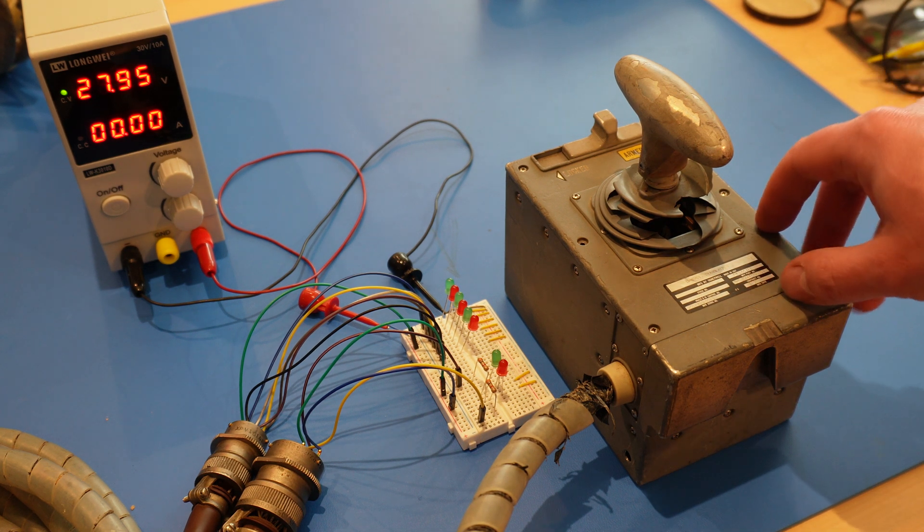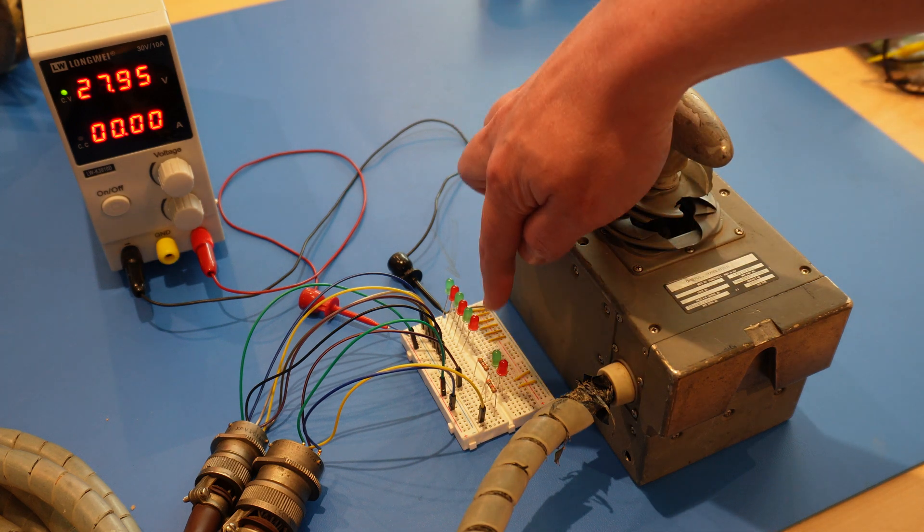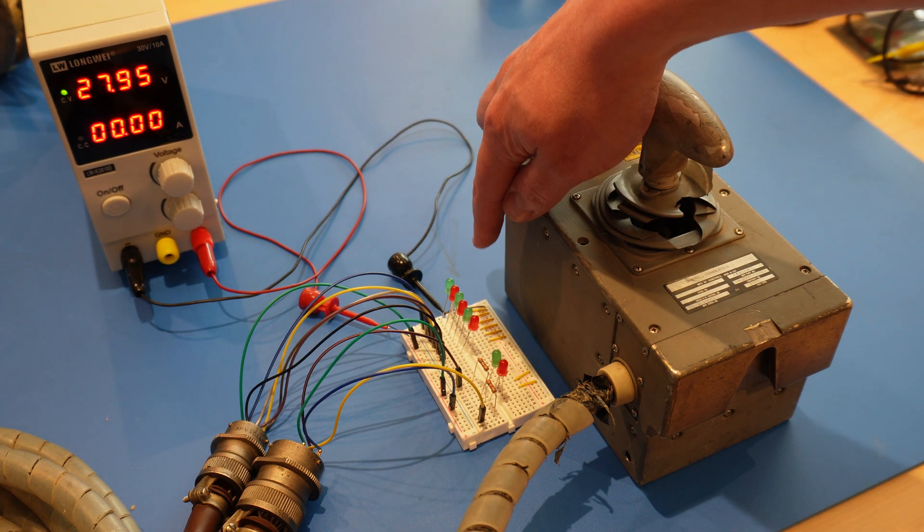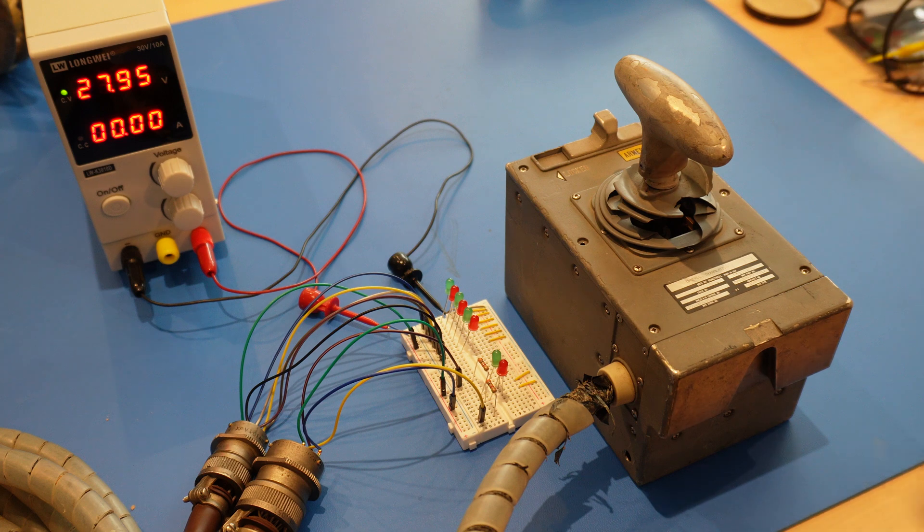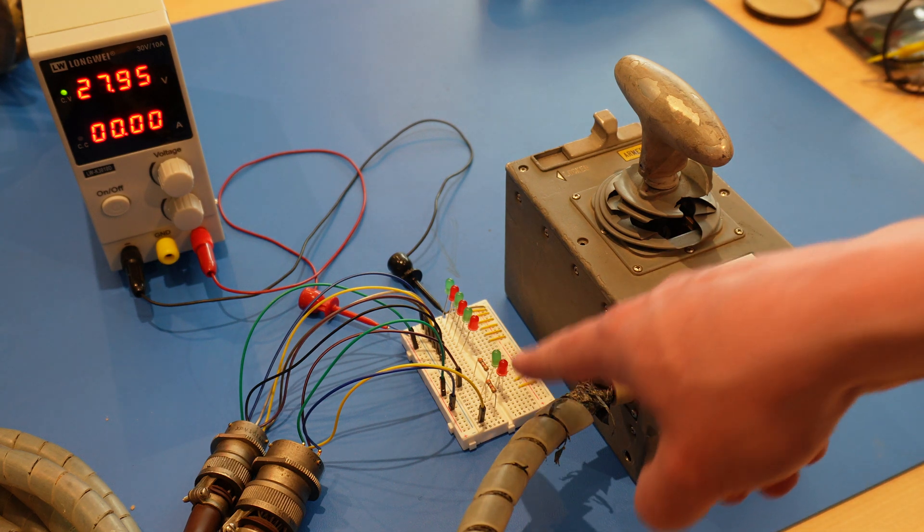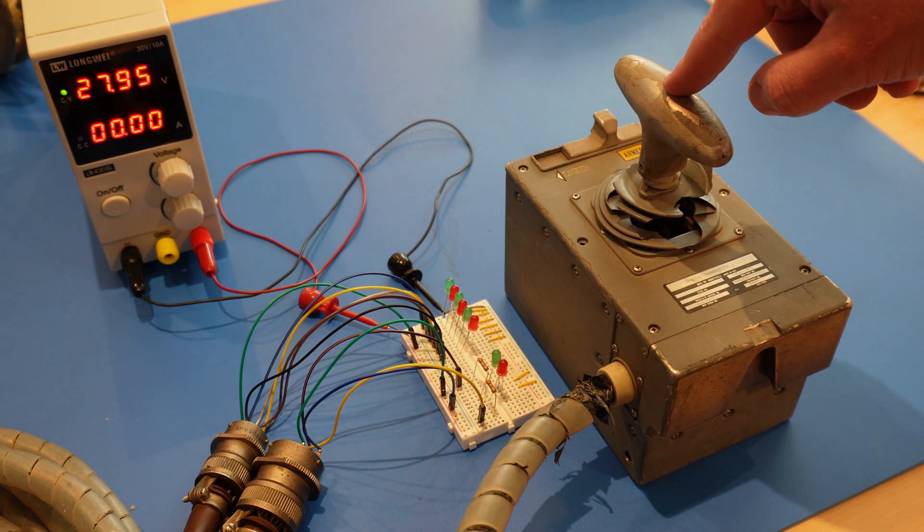So I have one wired up here. I have two LEDs on each axis, green being positive, red being negative, and I also have an LED for clockwise and an LED for counterclockwise.